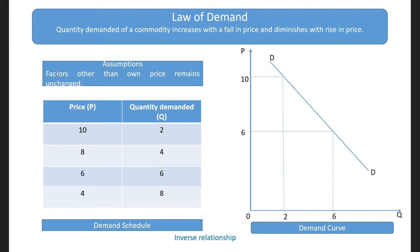At each and every point of the demand curve, there is a combination. Here we can see that price is measured on the vertical axis and quantity demanded on the horizontal axis. When the price is Rs.10, quantity demanded was 2 units. Then as price goes on falling, quantity demanded goes on increasing.